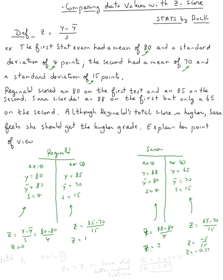Now, if we call this z1 and if we call this z2, the total for the z-score will be 0 plus 1 for z1, which is 1. Now for z2, we add both of them, 2 plus negative 0.33, and that would be equal to 1.67.